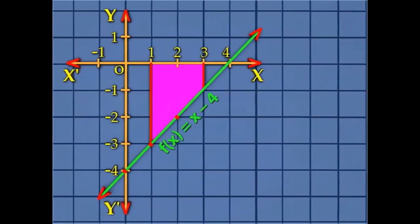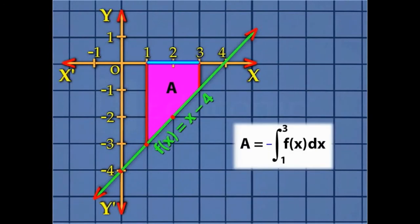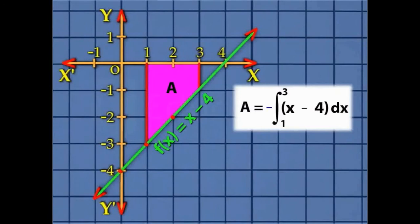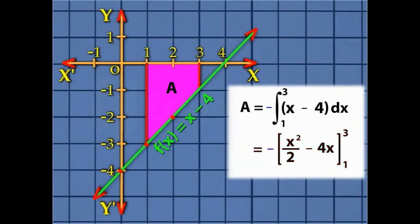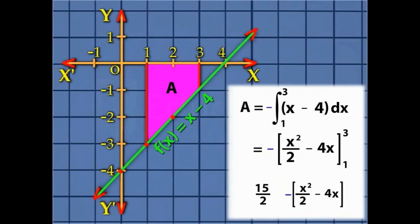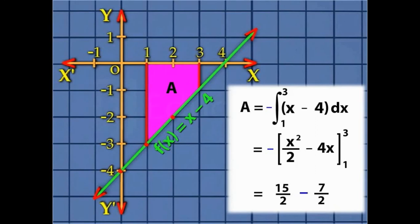Thus, the area can be denoted by a negative definite integral from 1 to 3 of f(x) dx, where f(x) = x - 4. Now compute the definite integral by first integrating x - 4 with respect to x. Evaluate the integral at x = 3 and x = 1, then subtract the results. The difference obtained gives the required area. This is how we find the area bounded by a curve below the x-axis.